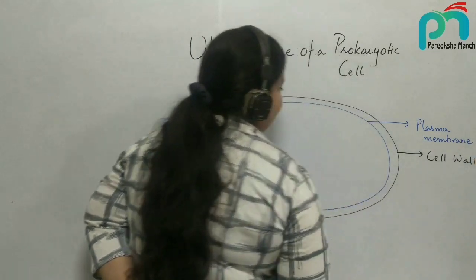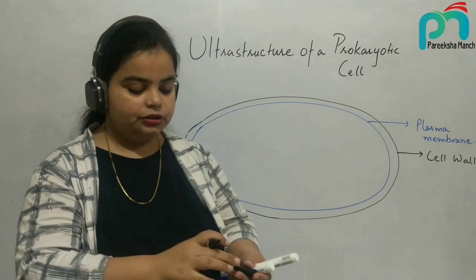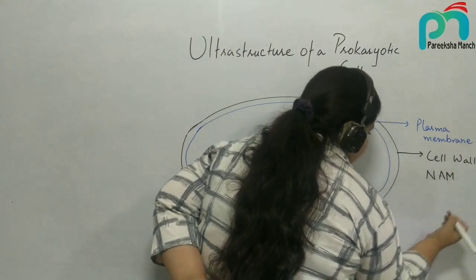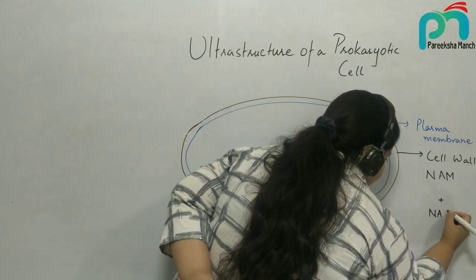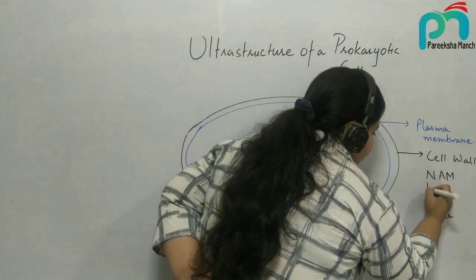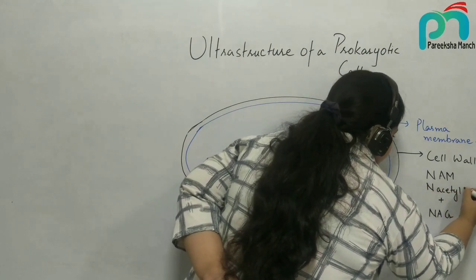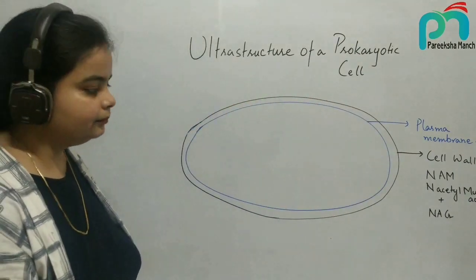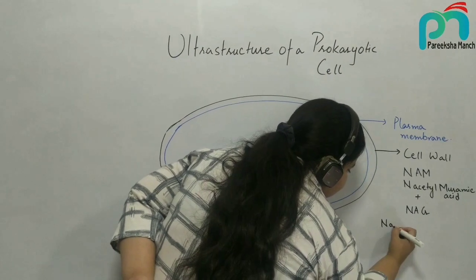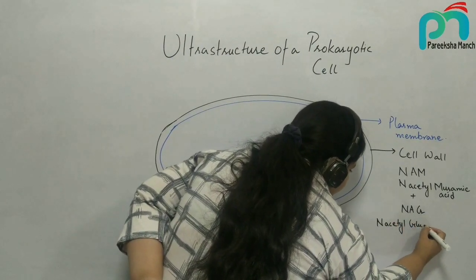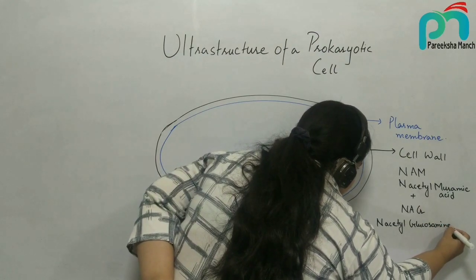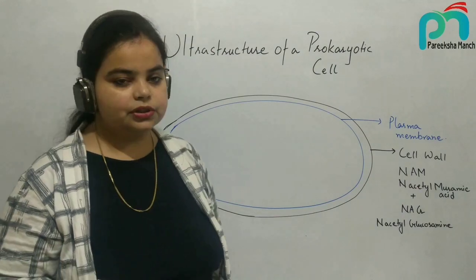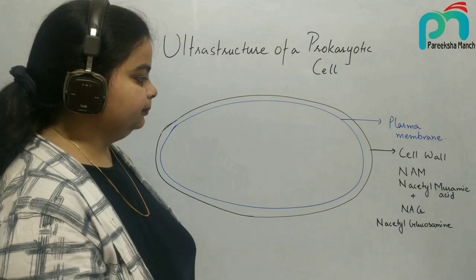Bacterial cells have a cell wall, and the bacterial cell wall is made up of a primitive molecule. That molecule is NAM and NAC. NAM is N-acetyl muramic acid and NAC is N-acetyl glucosamine. Both of them are polymers of glucose.